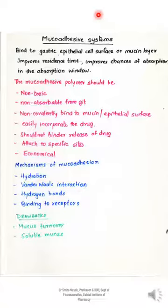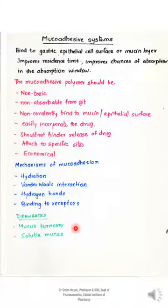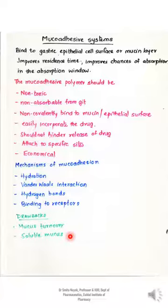Because these systems are designed to bind to the mucus or epithelial surface, the major drawback is that efficiency depends upon the turnover of the mucus. Also, if the mucus is soluble, the system will not bind and remain at one position for a long time — it will be washed off with the soluble mucus.